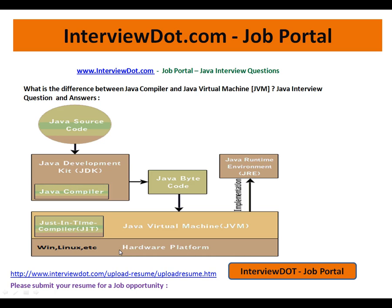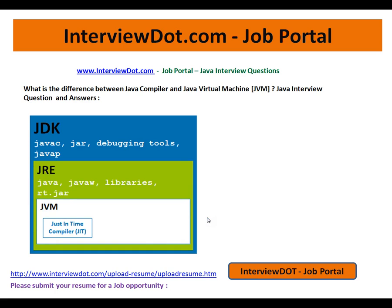That's why we call Java platform independent — you have to compile only once and you can run the Java bytecode on any platform. I'm going to show a diagram so that you can understand in a better way, explaining where exactly the Java compiler and Java virtual machine are located.